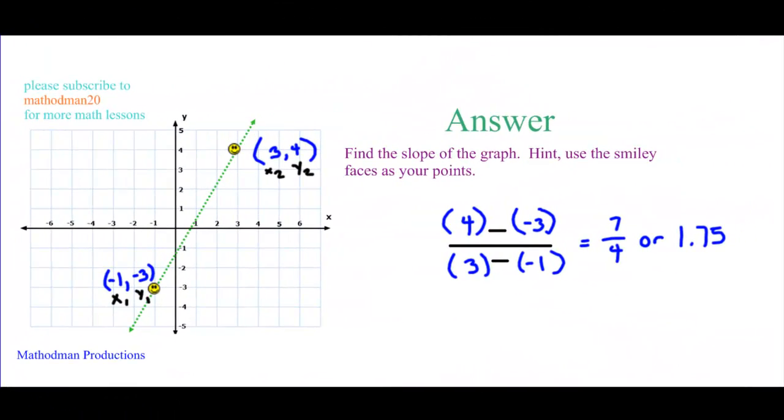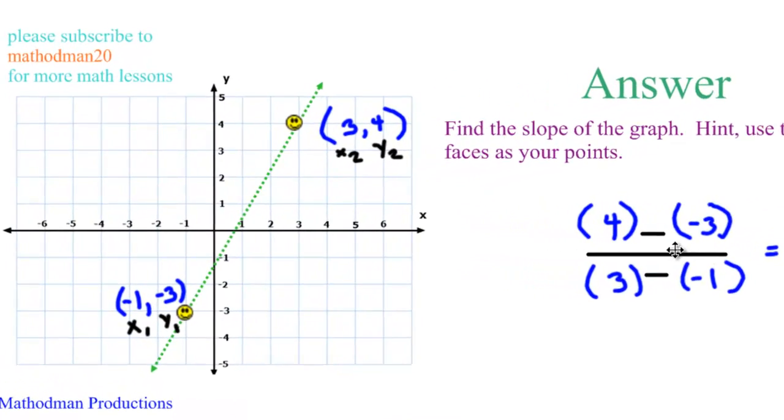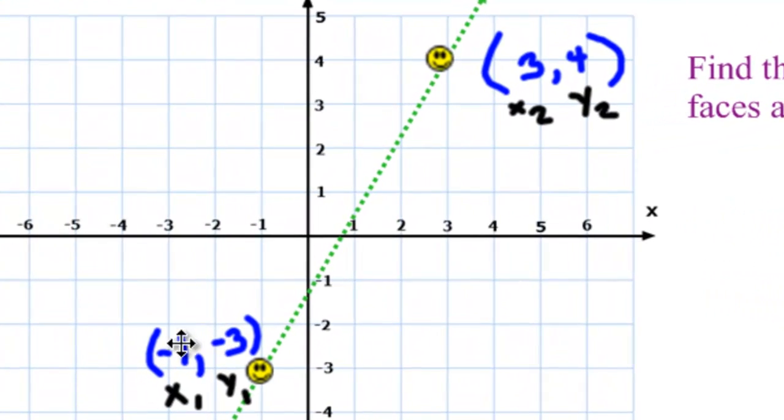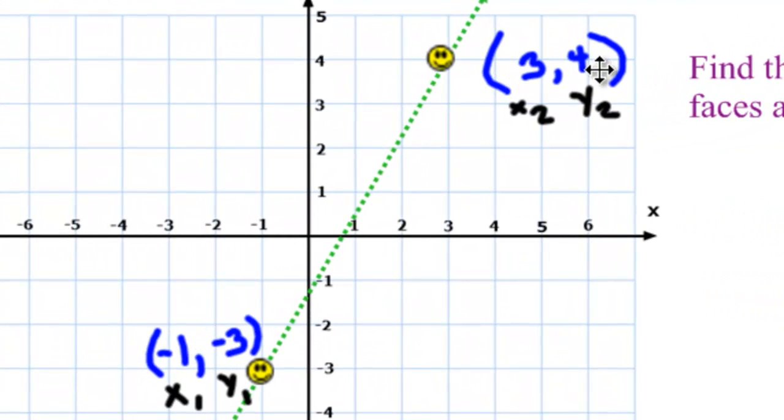Here is the answer for the question. The slope of that line is 7 fourths, or 1.75. Once again, if I were you, I would start the problem by labeling everything. First label your coordinates. Then I always like to put the x, y. The ones mean it's my first point, the twos mean that it's my second point.